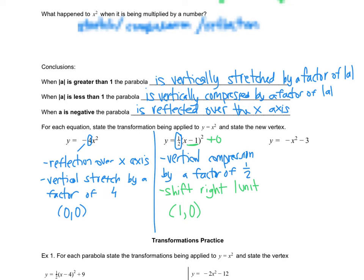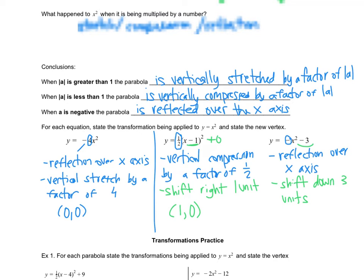For the last one, I see a negative for my a value, which means it's reflected over the x-axis. A negative a value is why our parabola opens down — it's because of this transformation. Then I have negative 3 outside the bracket, past the exponent of 2, so that means it's up-down movement. Shift down 3 units, making the vertex 0, negative 3.